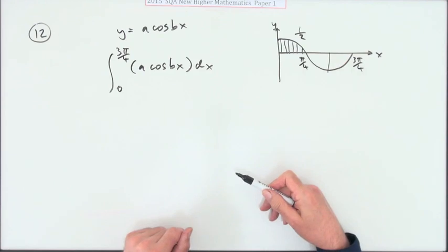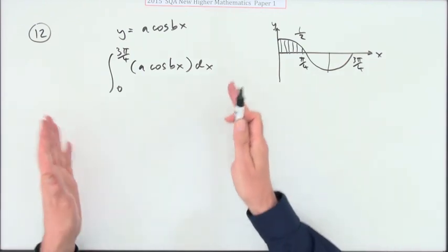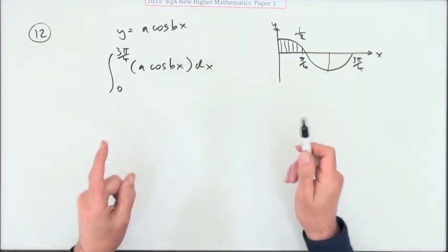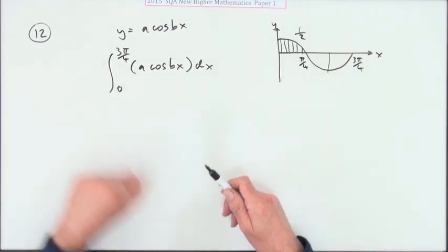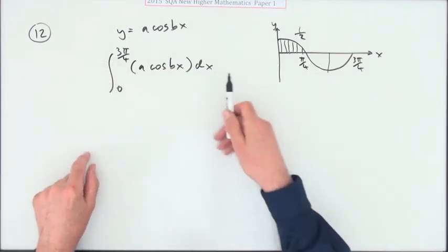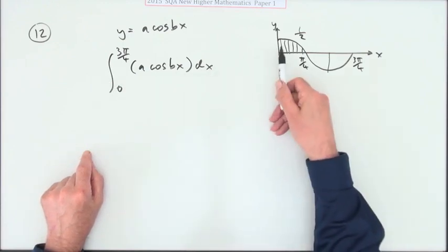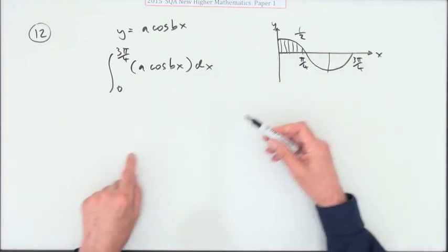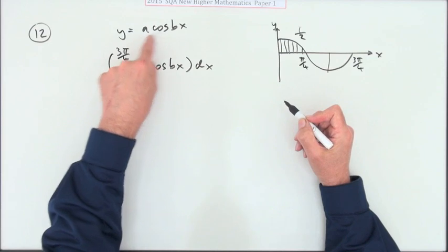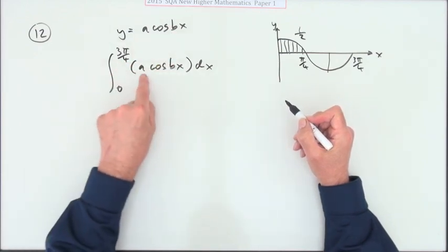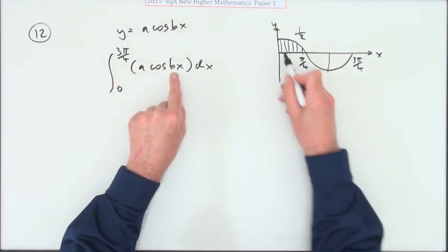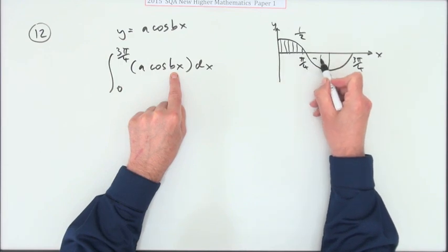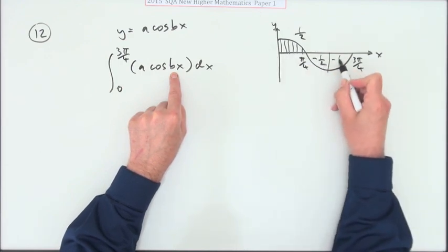That would be true if it was asking you for the total area, which is an interpretation of the integral. The integral itself is just a blind calculation that evaluates all the positives and negatives. So when this evaluates—and it doesn't matter what a, n, b is—when this evaluates this function, it will count a half, then it will count negative a half, so it's back to zero, then it will count another negative a half.